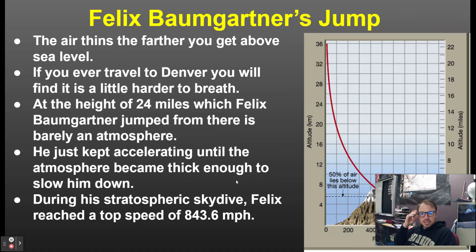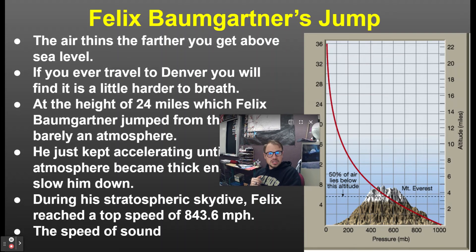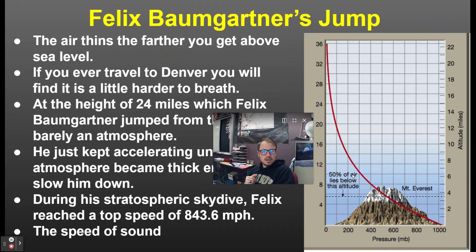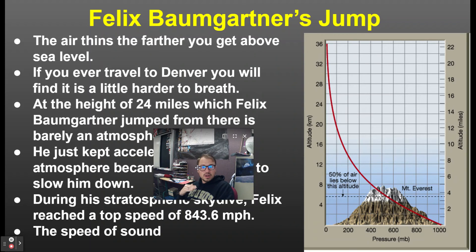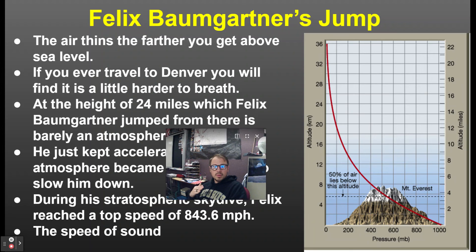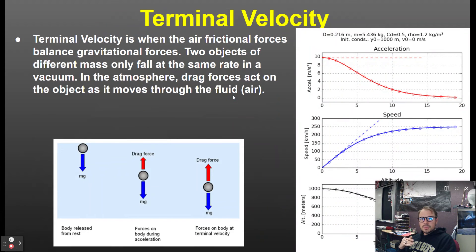During his jump Felix reached about 843.6 miles per hour — exceeding the speed of sound and going supersonic. The graphic shows that 50% of the air rises below the level of Mount Everest, so once you get past a certain altitude the atmospheric pressure is very low.